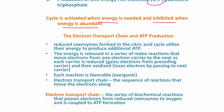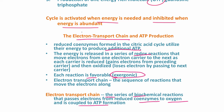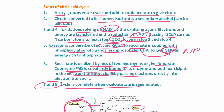The reduced coenzymes formed in the citric acid cycle are high energy molecules, and they utilize their energy to produce additional ATP. In the electron transport chain, the energy from these reduced coenzymes is released in a series of redox reactions that move electrons from one electron carrier to the next. As each carrier is reduced—gaining electrons from the preceding carrier—and then oxidized by passing electrons to the next carrier, each reaction is exergonic, meaning energy is released. The electron transport chain passes electrons from reduced coenzymes formed in the citric acid cycle to oxygen, and is coupled to ATP formation.